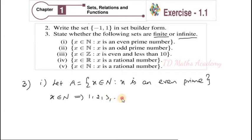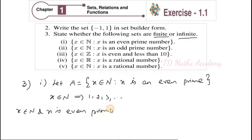x element of natural number implies x may be 1, 2, 3, dot dot dot. And another condition: x element of natural number and x is an even prime. So what is the even prime here? Among natural numbers, the even prime is only one number. That is 2. What is an even prime? An even number that is also prime — that is 2 only. Therefore, set A is {2}.